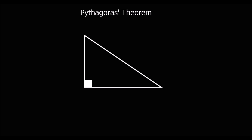Pythagoras Theorem is a special relationship in any right-angled triangle. We can tell this triangle is right-angled because of the square symbol in the corner, which means 90 degrees — a right angle. And in any right-angled triangle, Pythagoras Theorem is true.